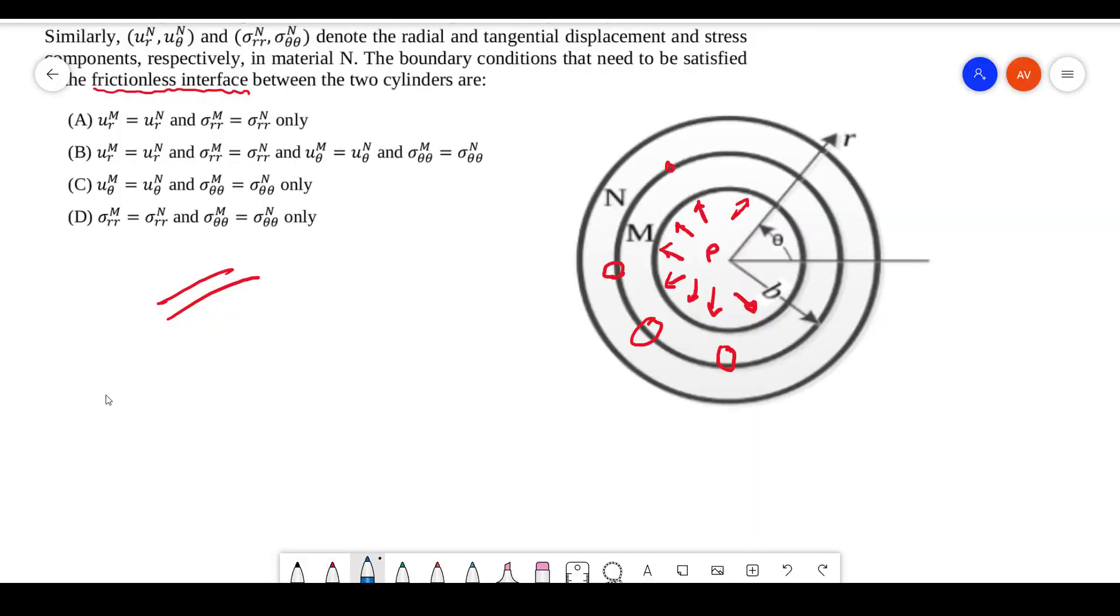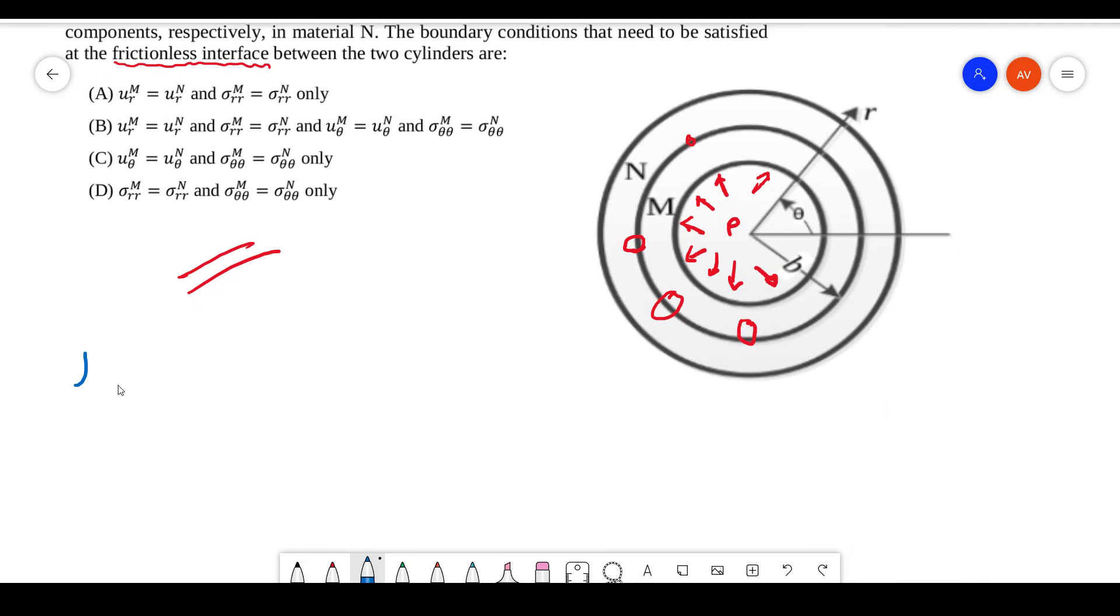Now, since we got that your displacement is the same, consider this as the interface at M. That means you are going to get compressive forces like this. Now consider another interface for N. Here also, you are going to get the same forces; just the direction will be different.